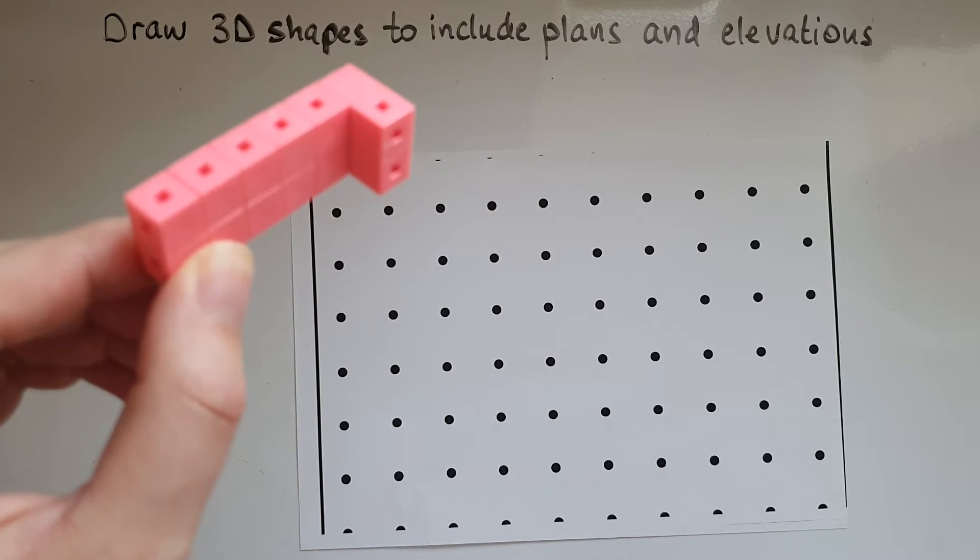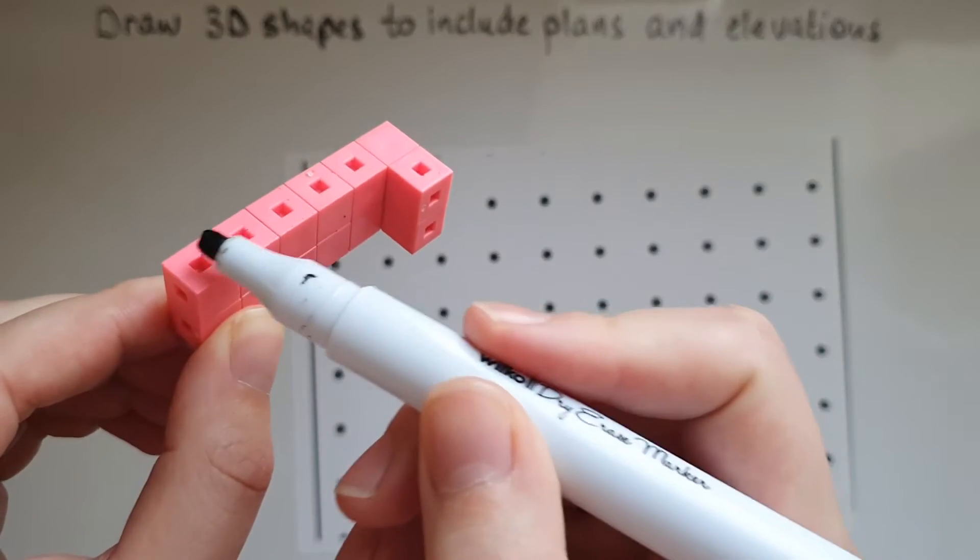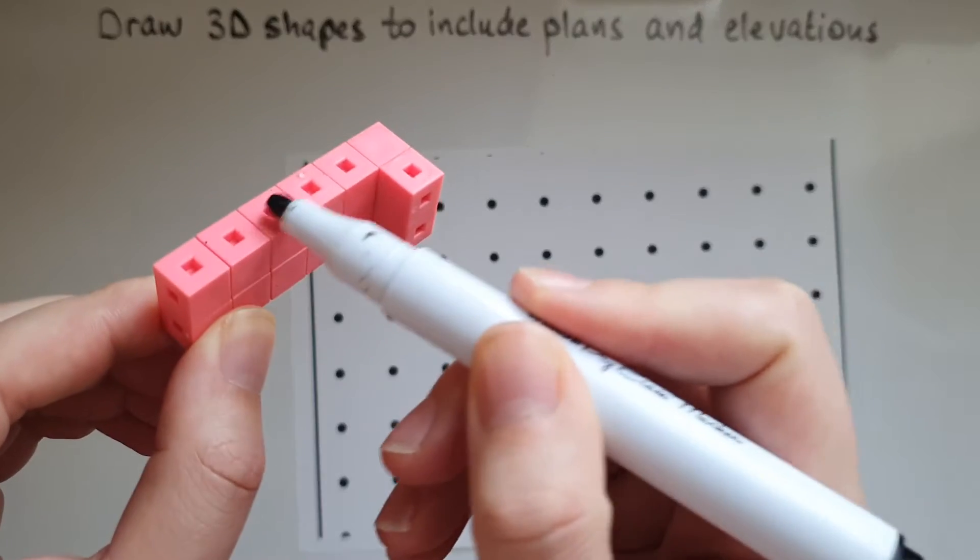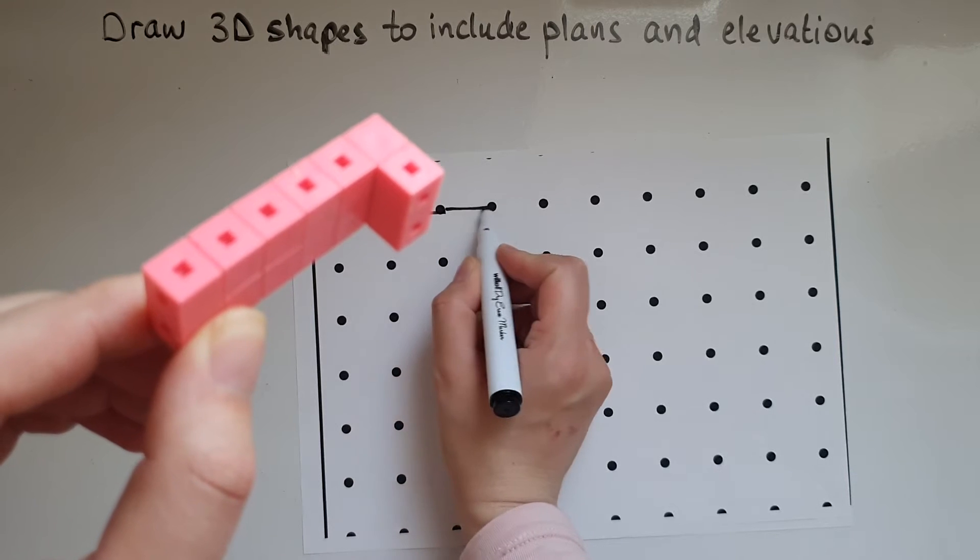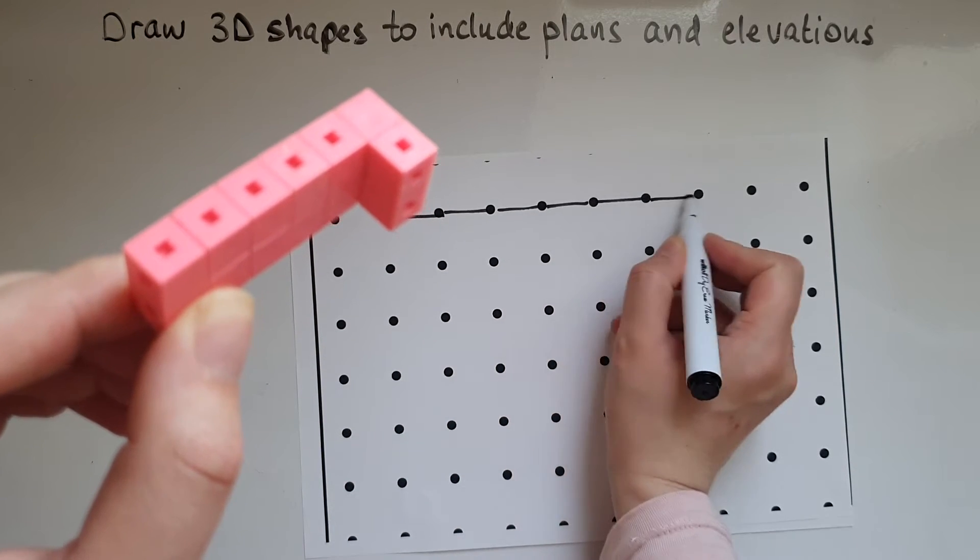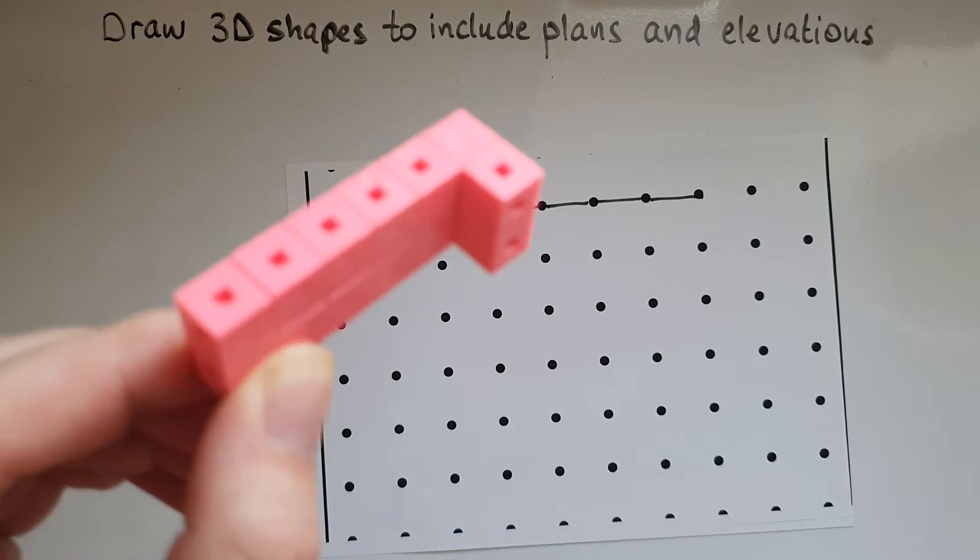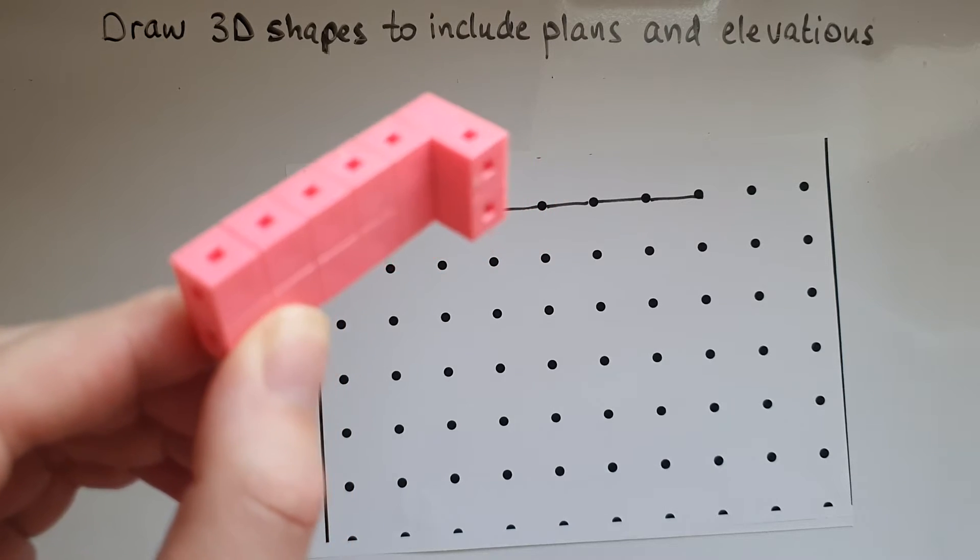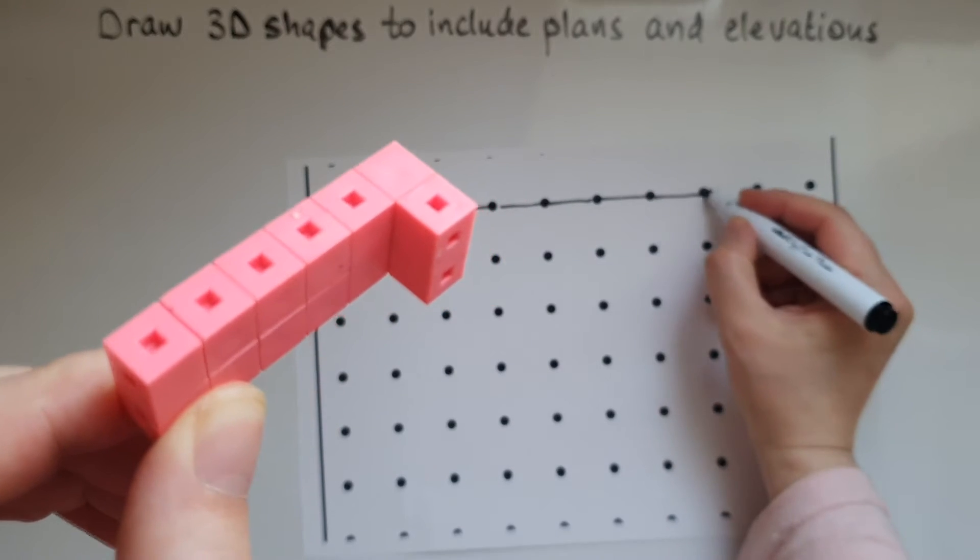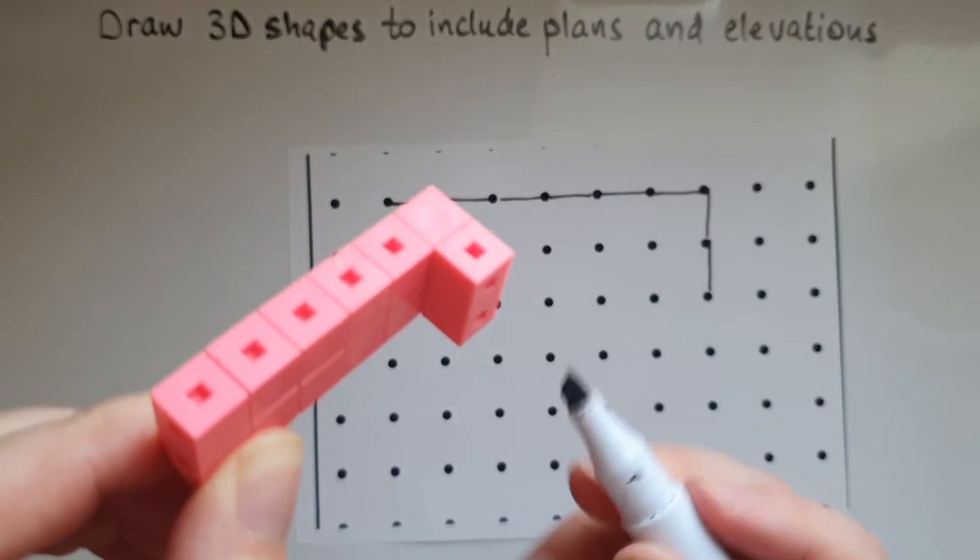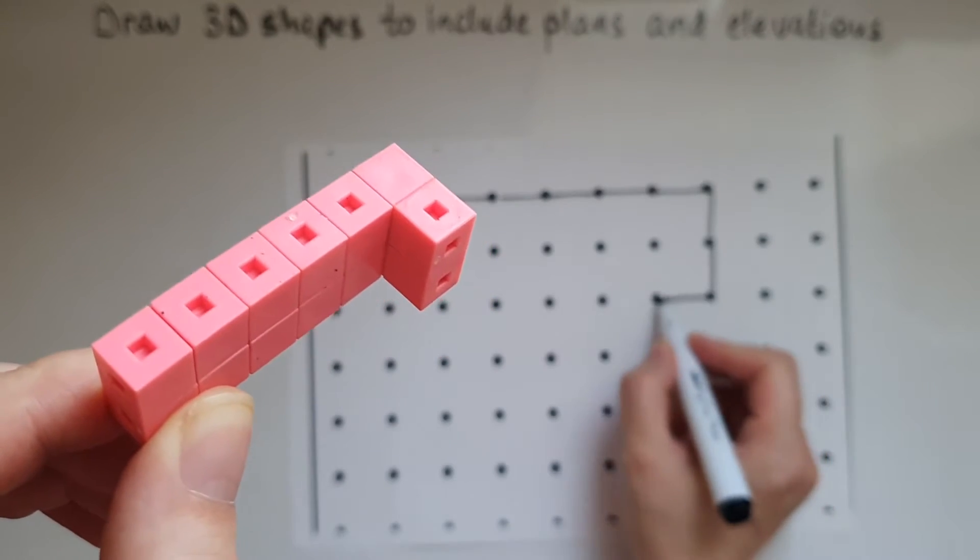So what you can see from the top is six units going across. You'd need to use a ruler but I don't for simplicity in here. And then we go two units down and then one across again.